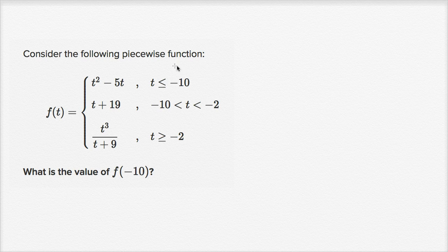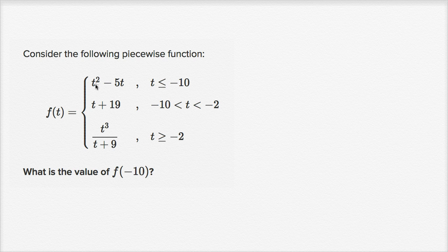Consider the following piecewise function. They say f(t) is equal to, and they tell us what it's equal to based on what t is. So if t is less than or equal to -10, we use this case. If t is between -10 and -2, we use this case. And if t is greater than or equal to -2, we use this case.